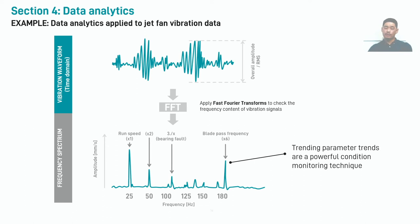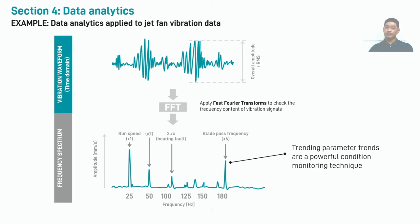Under normal operation, we do expect to see some 1x energy. However, should this start to increase, we may begin to suspect that the impeller may be becoming out of balance, or perhaps a supporting bolt has started to loosen, as this can also manifest in an increase in 1x energy — though typically looseness can also be accompanied by an increase in 2x energy as well. Bearing faults are also commonly diagnosed by looking at frequency spectra, and bearing faults tend to appear in the frequency spectra between the range of 3x and 8x run speed, and are always not an integer multiple of run speed. Now that we have identified some faults in the frequency spectra, we can start to trend the amplitude of each frequency component and see if they change over time. Trending parameters remains one of the most simple but powerful condition monitoring techniques.